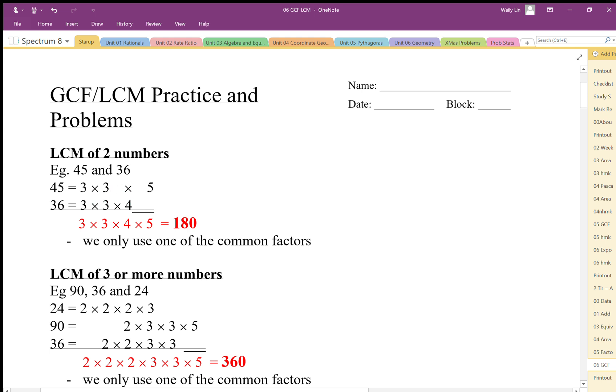So in this case we could either move that factor up here times 4, or we can move this factor down and make that times 5. In either case we get 3 times 3 times 4 times 5 which is 180. So we're basically making all the factors in the top number match all the factors in the bottom number.